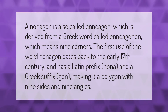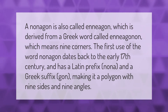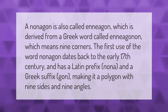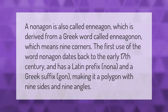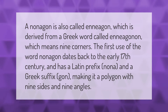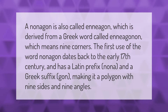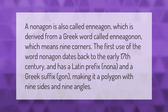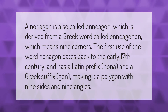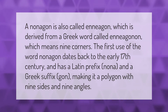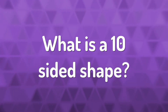A nonagon is also called an enneagon, which is derived from a Greek word meaning nine corners. The first use of the word nonagon dates back to the early 17th century and has a Latin prefix 'nona' and a Greek suffix 'gon,' making it a polygon with nine sides and nine angles.